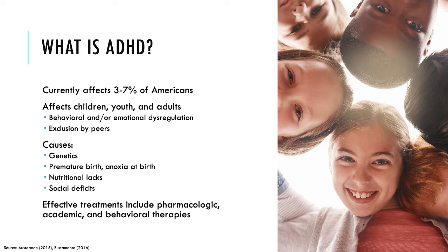There are several different causes, not one particular cause. There are genetic components, as well as factors such as being born prematurely or having anoxia — lack of oxygen — at birth. It can also be affected by nutritional deficits and social deficits as a child is growing. There are some effective treatments, including pharmacological treatments and academic and behavioral therapies.